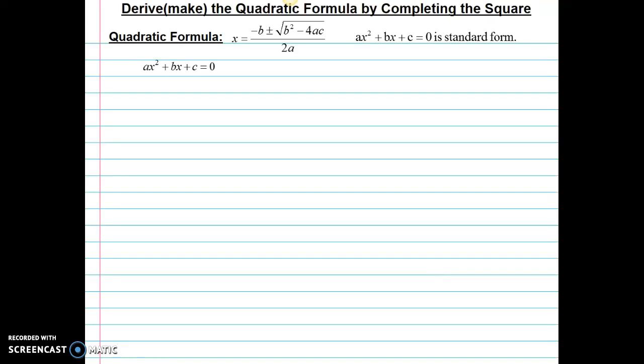So step one, as always, make sure the equation is equal to zero. And we're going to use complete the square. So the x squared term has to be one. So we're going to divide everything by a so that x squared would have a coefficient of one.